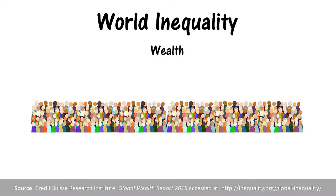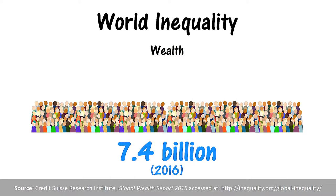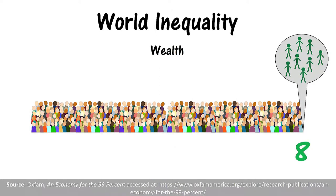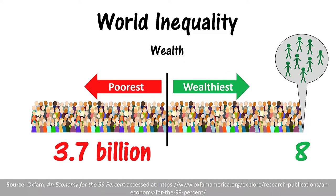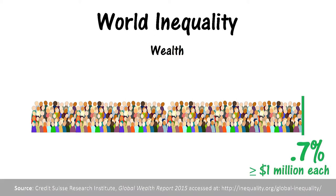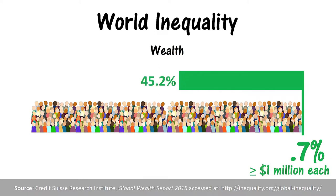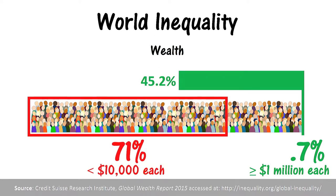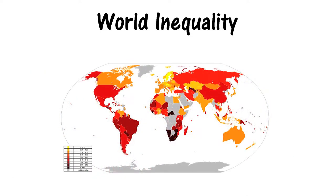Now let's look at the degree of wealth inequality in the world. A recent report analyzed wealth distribution among the world's approximately 7.4 billion people and found that the eight wealthiest people in the world have the same amount of wealth as the poorest half — in other words, the eight at the top equal the 3.7 billion at the bottom. A different study from 2015 found that the wealthiest 0.7% held at least one million dollars of wealth each and made up 45.2% of the world's total wealth, while the bottom 71% held less than $10,000 each and combined for just 3% of the world's total wealth.